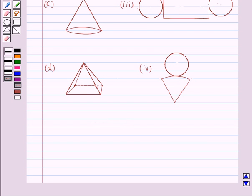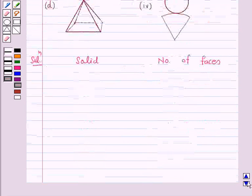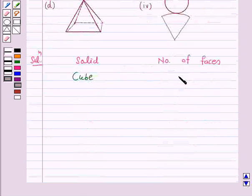So keeping this in mind let's start the solution. Now we will first find out the number of faces in the given solid. Now in part A the given solid is a cube and the number of faces in cube are 6.